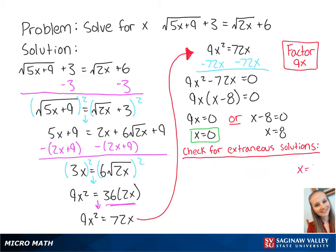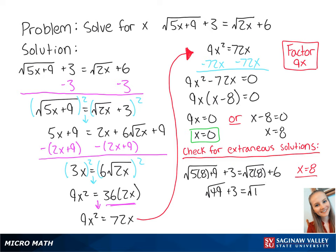Now we'll check x equals 8 by plugging 8 into the original equation. This gives us the square root of 5 times 8 plus 9, plus 3, equals the square root of 2 times 8 plus 6. This becomes the square root of 49 plus 3 equals the square root of 16 plus 6, which becomes 10 equals 10. This is correct, so x equals 8 is our other answer.